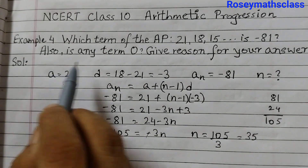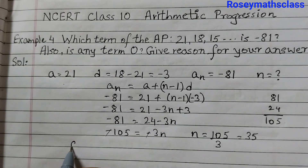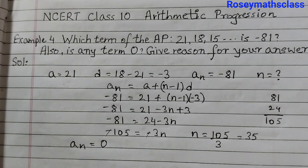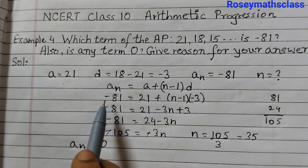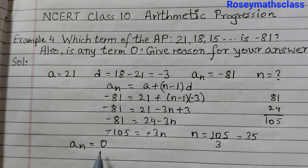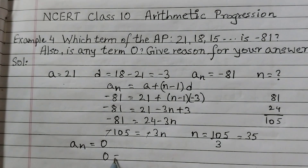For the second part, they are asking: is there any term whose value is 0? We will use the same formula, and in place of Aₙ we will write 0, and we will try to find out if there is any N for which we get 0.